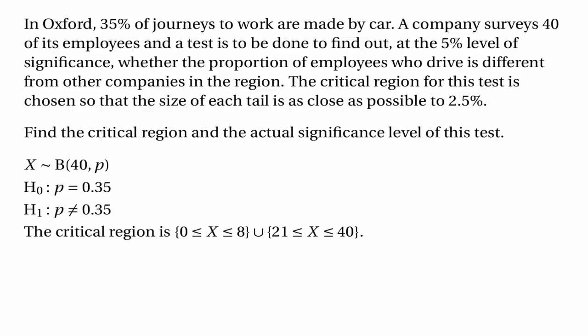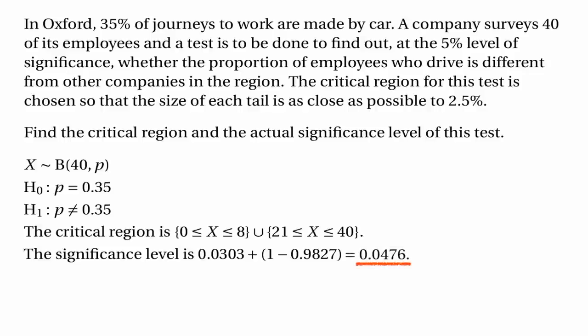0 is the minimum possible number of drivers and 40 is the maximum. The actual significance level is obtained by adding the two tail probabilities: 0.0303 plus (1 minus 0.9827), which gives 0.0476, or 4.76%.